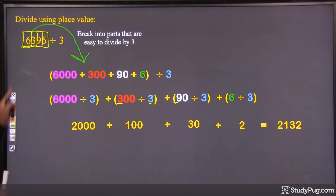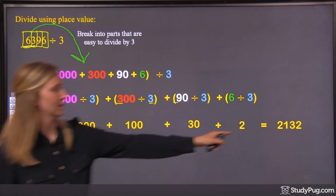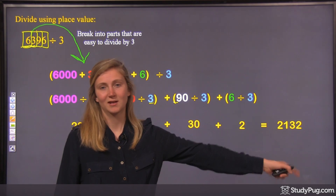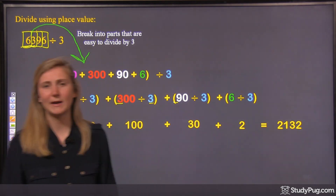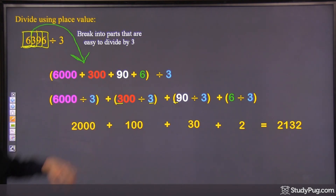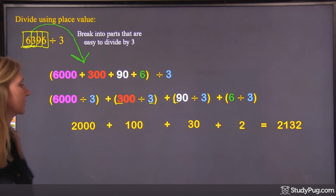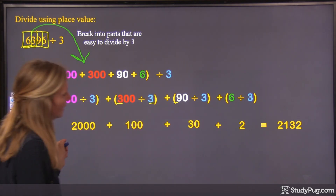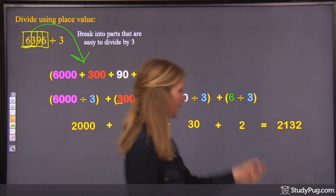There you are — 6,396 divided by 3 is 2,132. It doesn't really make a difference that it's a four-digit number, because you're still doing the breaking apart in the same way as when it was two-digit or three-digit. You just maybe have a few more steps, and at the end you end up with a bigger number.